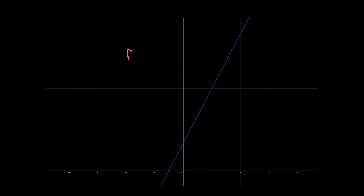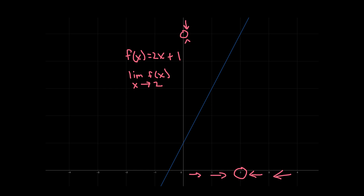This is what we mean by a limit. Let's look at an example. Say we have the function f(x) equals 2x plus 1, and we want to find the limit as x approaches 2. We want to show that as x gets closer and closer to 2, the function gets closer and closer to some number L. So let's say we pick epsilon to be 0.1. We want to find a delta such that if the distance between x and 2 is less than delta, then the distance between f(x) and L, which we don't know yet, is less than 0.1.